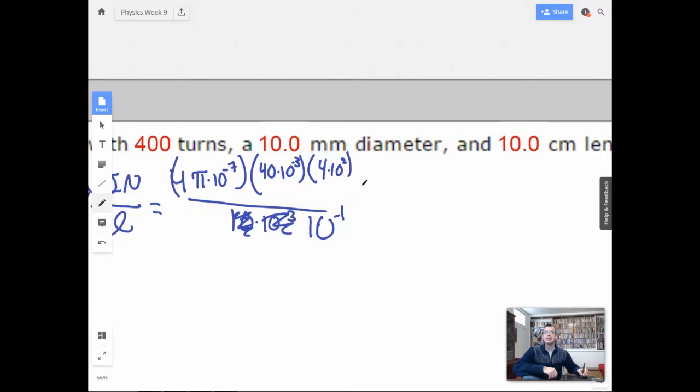Almost failed right there. So we're going to have, what is it, 16 pi. 4 times 4, make this negative 2, make that a negative 1, make that a 1, make that a 10 to the negative 6th. Don't forget another 4, there's another 4, 64. 64 pi times 10 to the negative 6th.